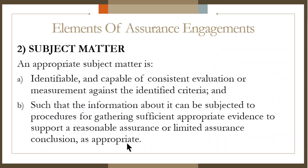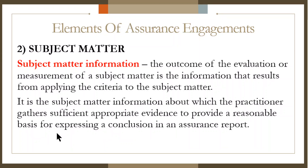The second element of assurance engagements is the subject matter, which should be appropriate. It is identifiable and capable of consistent evaluation or measurement against identified criteria, such that information about it can be subjected to procedures for gathering sufficient appropriate evidence to support a reasonable or limited assurance conclusion. The term 'subject matter information' refers to the outcome of the evaluation or measurement of a subject matter — the information that results from applying the criteria to the subject matter — about which the practitioner gathers sufficient appropriate evidence to provide a reasonable basis for expressing a conclusion.